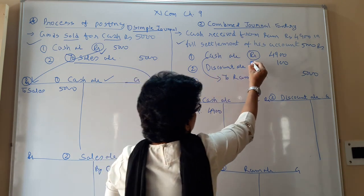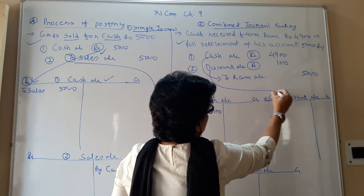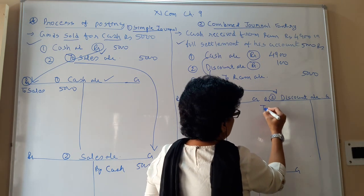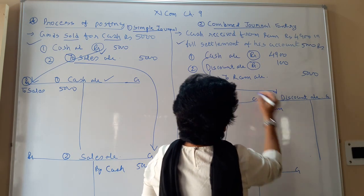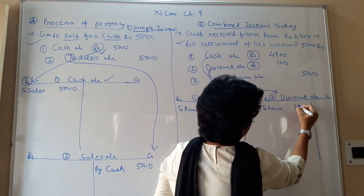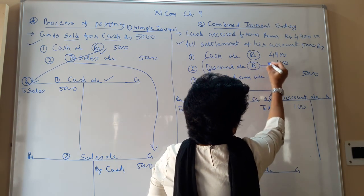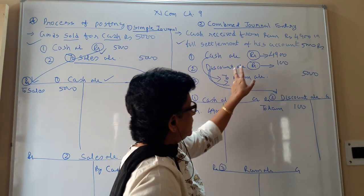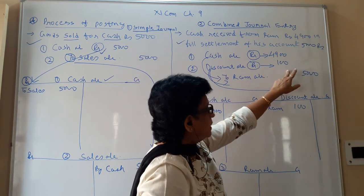Second, discount account is also debited. So go to the discount account. Write on the debit side. Again here: to Ram. The opposite account is Ram. So rupees 100. See you have to follow the figure which is next to that, opposite to that, in the line of that journal.